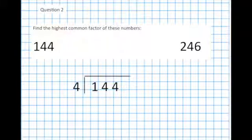Try 4. 5 won't go because it doesn't end in a 5. Try 6. 6 into 14 goes 2, remainder 2. 6 and 24 are factors. And I think we're done there.